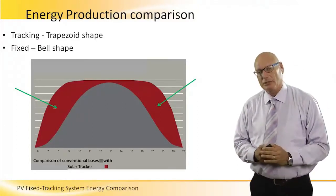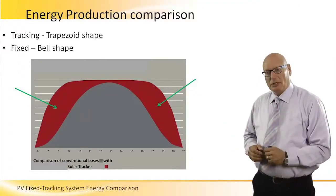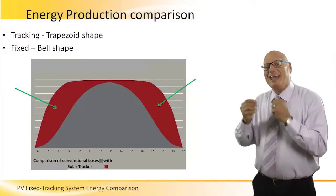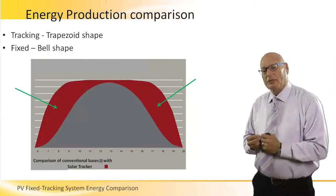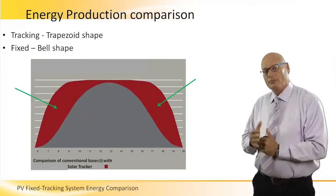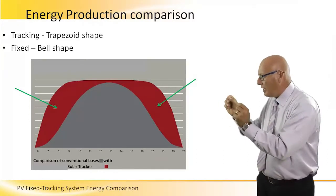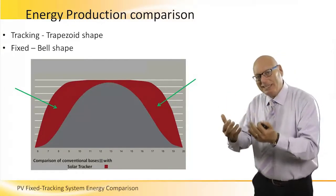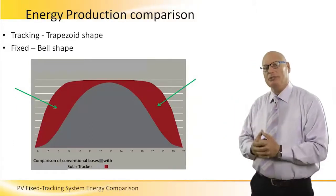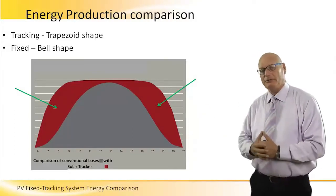The red areas is really the gain in terms of energy due to tracking compared to fixed. This red area is the additional energy that we receive from early in the morning until late in the evening.